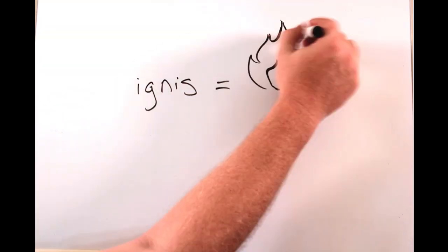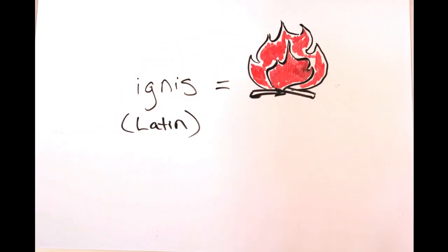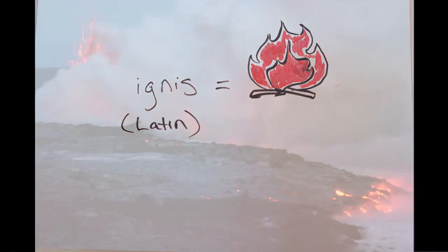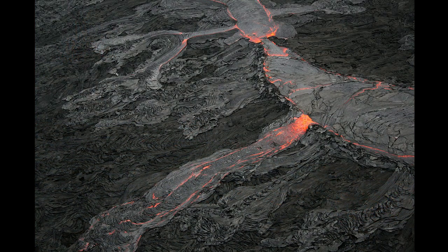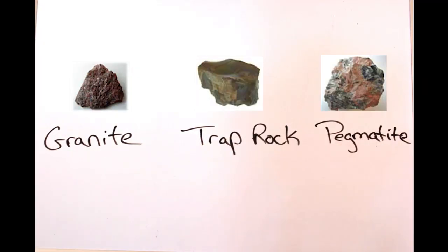Igneous comes from the Latin word ignis, meaning fire. Igneous rocks are very hard and formed when rock cools from its molten state of magma or lava. Examples of igneous rocks would be granite, trap rock, and pumice.